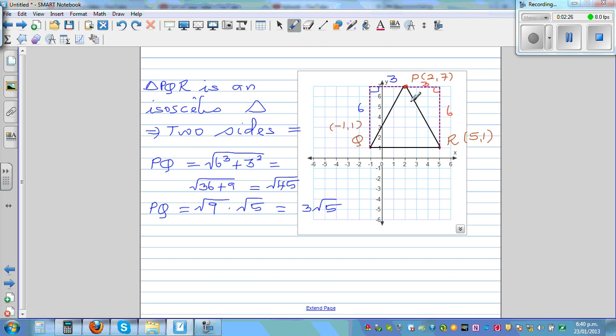So these two triangles have the same hypotenuse. So directly you can see, even without working, this is going to be square root of 45. So this is also square root of 45.